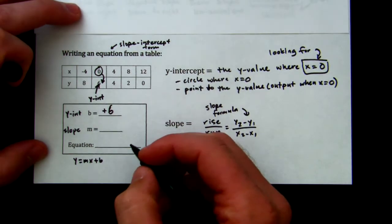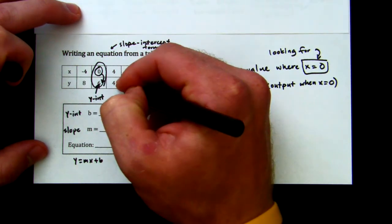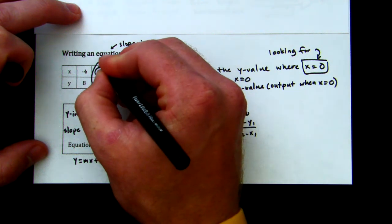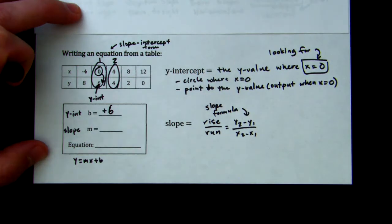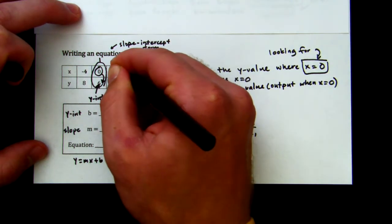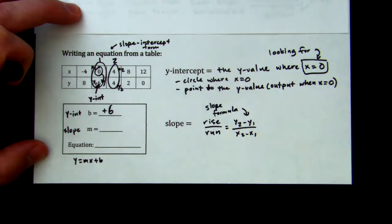I love zeros, so I'm going to pick this point, and I'm going to pick this point. And I'm going to say that this is my point number one and this is my point number two. So we have y values on the bottom: y2, x2, y1, x1.